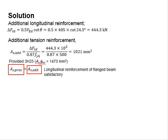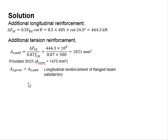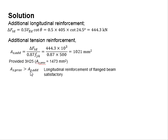With that, the flanged beam will be considered satisfactory when: the additional tension reinforcement is adequate, the shear links provided to resist the shear load are adequate, and the transverse reinforcement to resist shear within the flange section is adequate.